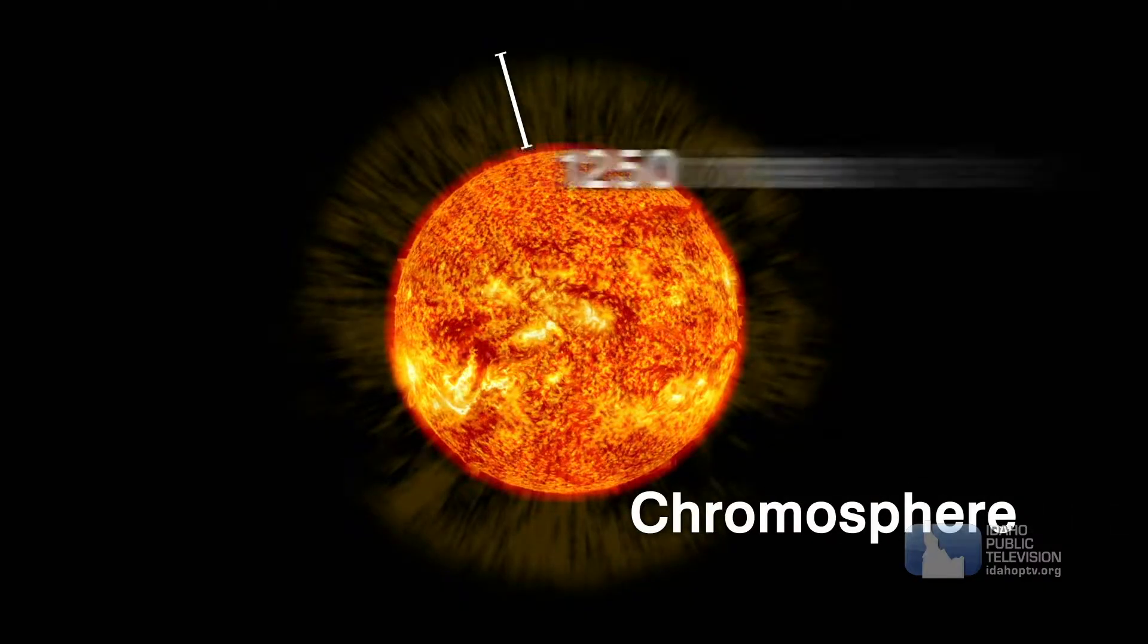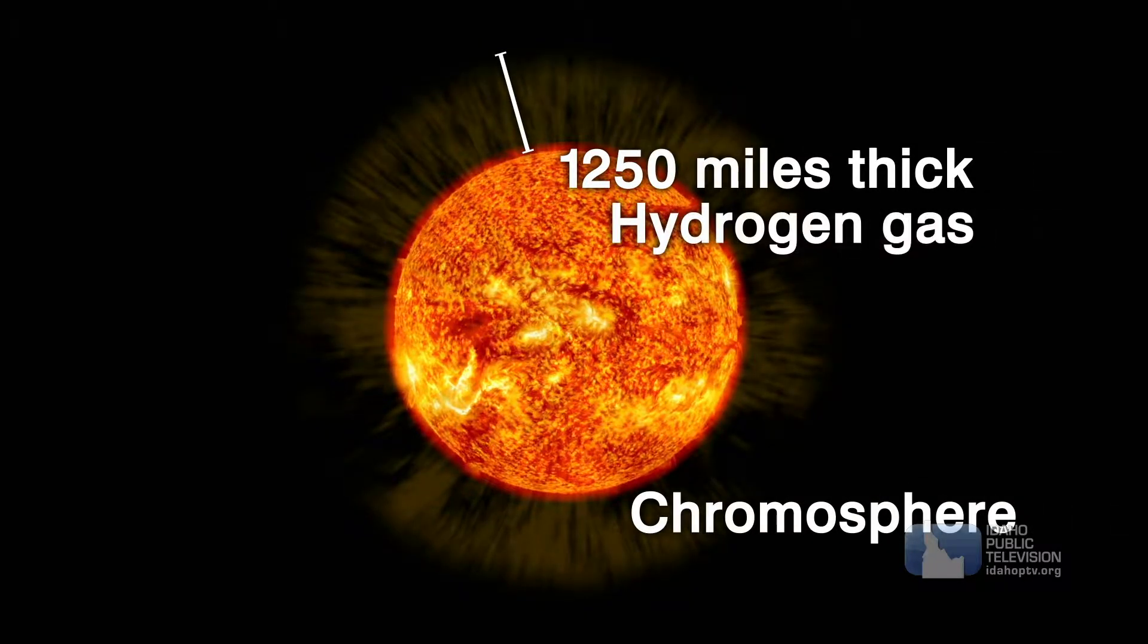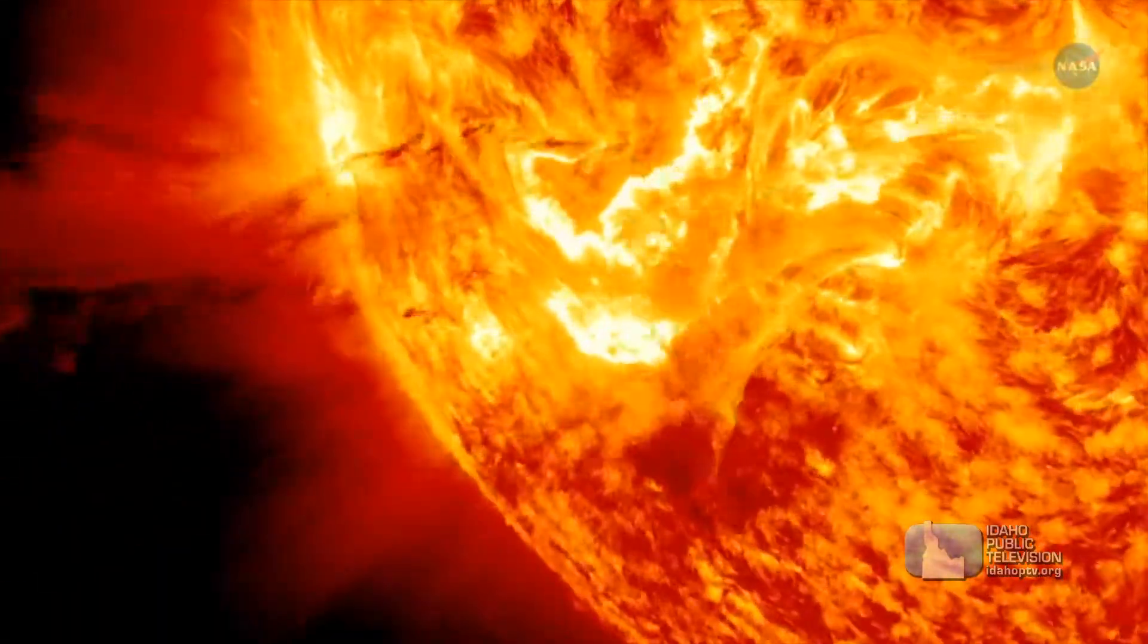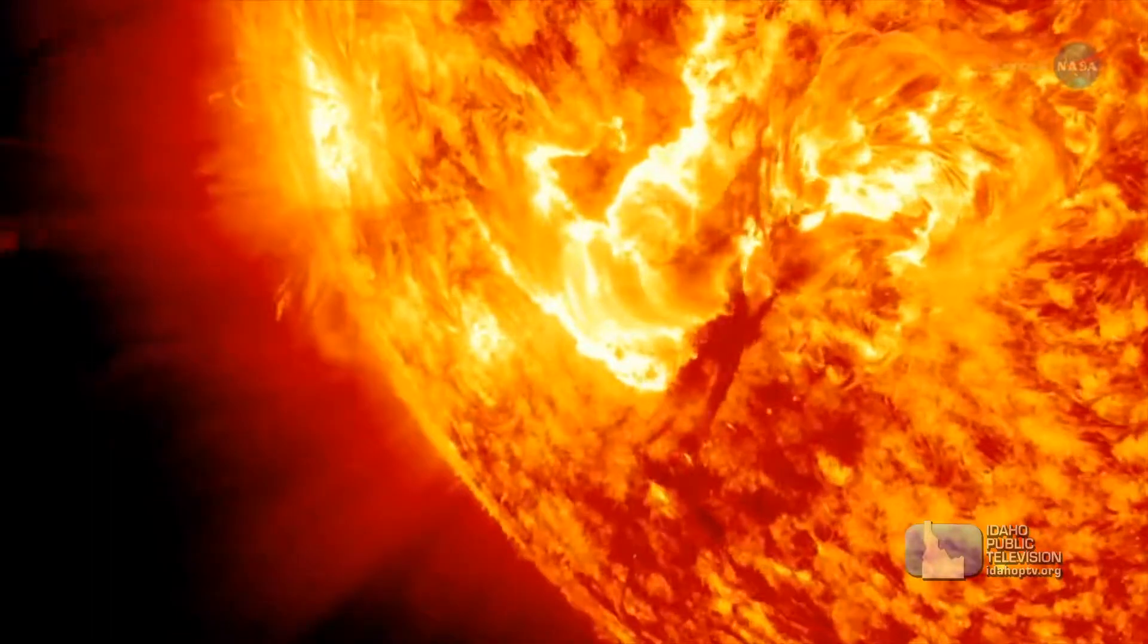The next layer is the chromosphere. It's about 1,200 miles thick and is made up of hydrogen gas. We can sometimes see violent eruptions exploding into the chromosphere.